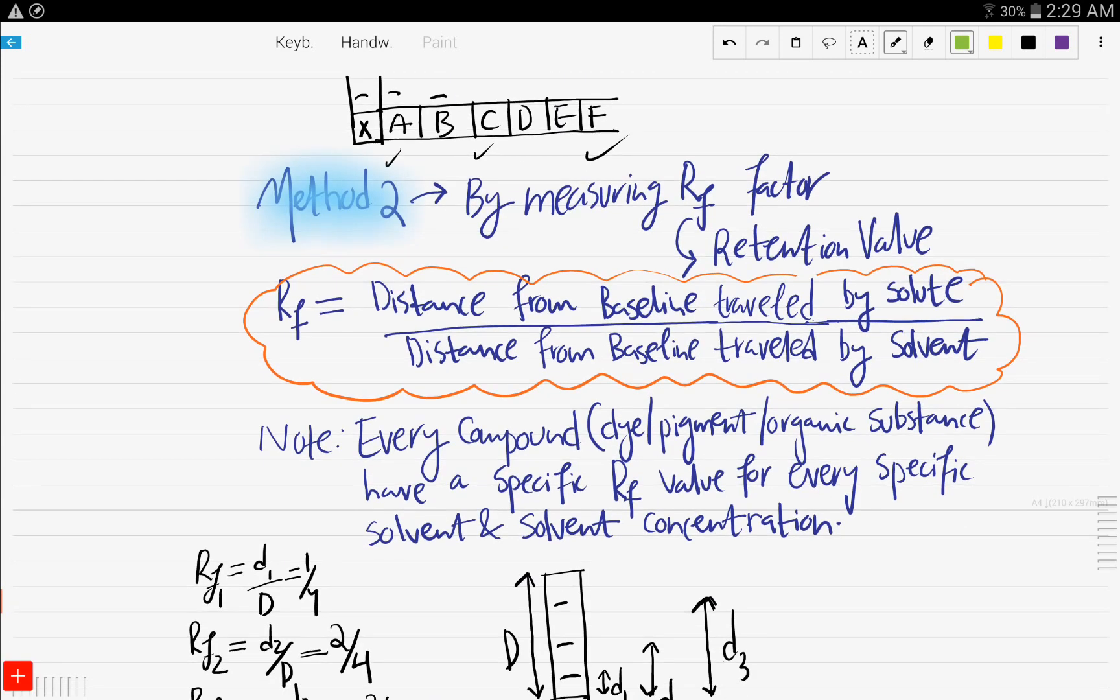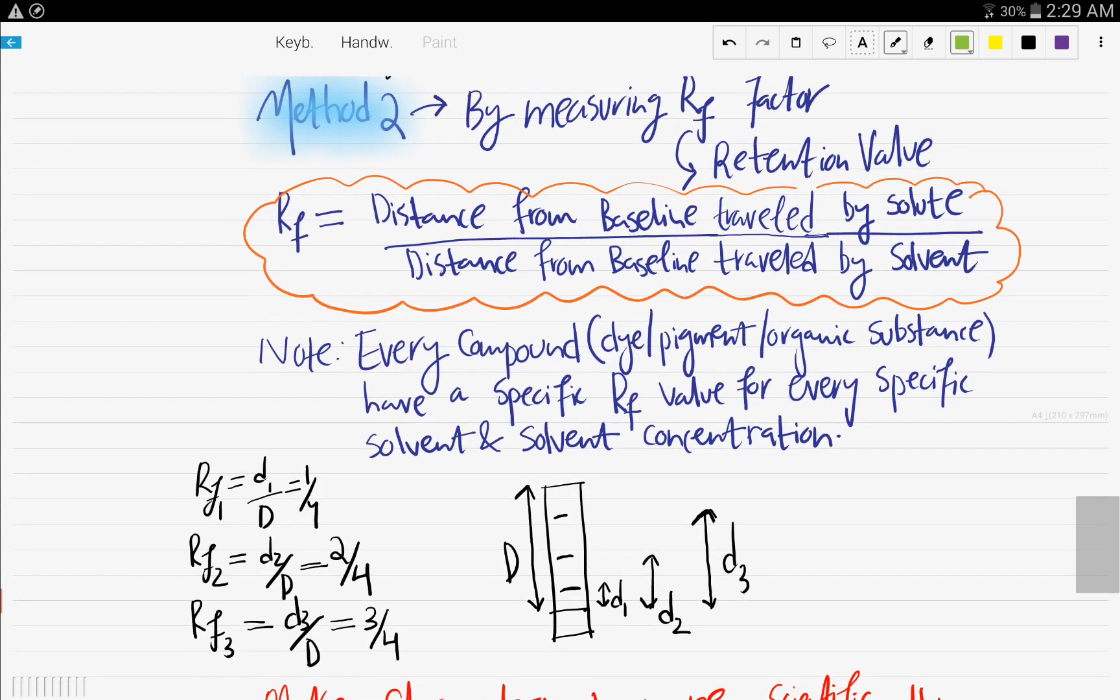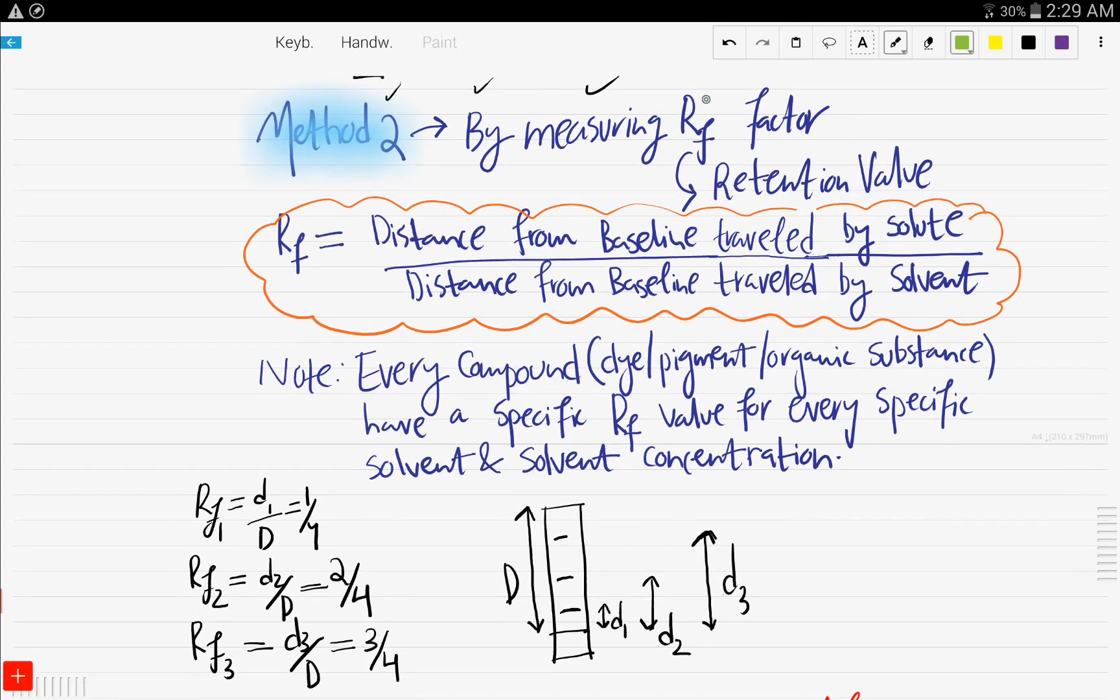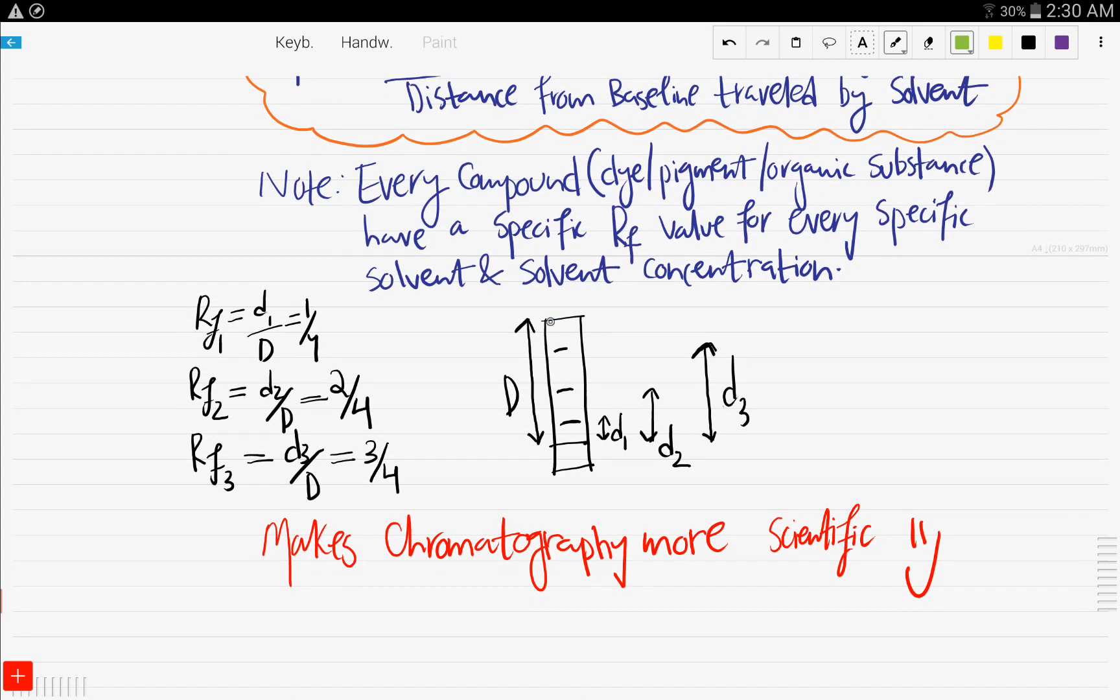Great. Now to the second method, which is more scientific, is by measuring something known as the retention value. It is RF factor. Now how it's calculated is the distance from the baseline that is the pencil line traveled by the solute over the distance from the baseline traveled by the solvent.